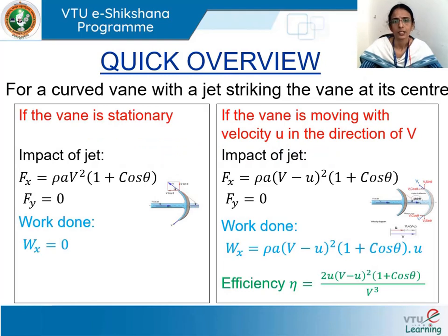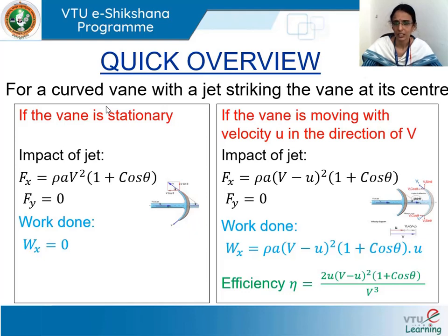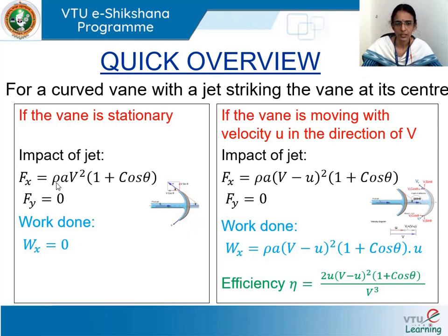Before we start the numerical examples, let us quickly glance through various concepts that we have discussed under this topic. We have discussed the impact of jet on a vane, particularly a curved vane which is symmetrical about the axis of the jet. When the vane is stationary, the expression for the force along the direction of the jet is f_x equal to rho a v squared into 1 plus cos theta. Since the vane is stationary, work done is equal to zero, where rho is the mass density of the fluid, a is the cross-sectional area of the jet, and v is the velocity of the jet. Theta is the vane angle such that the incoming jet gets deflected through an angle 180 minus theta due to the impact.